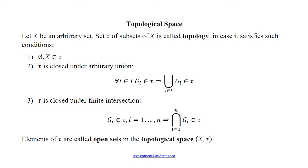Let's start with the topological space. Let X be any set. And let's define the topology on it. Set tau of subsets of X will be a topology if it satisfies these three conditions. The first one: empty set and X belong to tau.